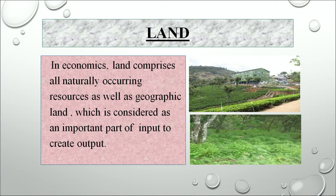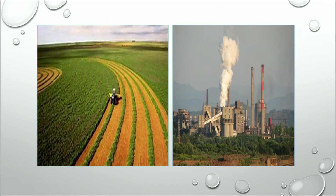The very first factor of production is land. In economics, land comprises all naturally occurring resources as well as geographical land, which is considered an important input to create output. We can see two pieces of land — one with fields and another with a factory. Without land, it is impossible to have any kind of output. In the agriculture sector, a farmer needs land, and in the manufacturing sector, producers need plants or factories to produce various goods and services.